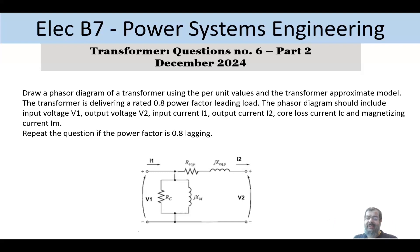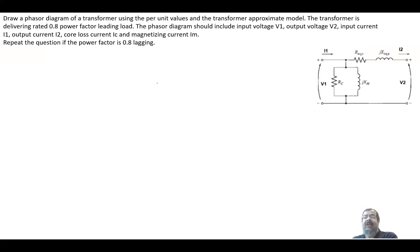This question is about the phasor diagram using per-unit values and the transformer approximate model. This is the transformer approximate model where R-equivalent and X-equivalent represent the winding, and RC and XM represent the core.